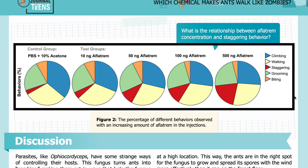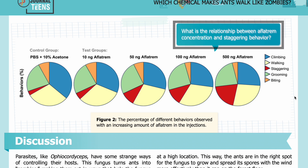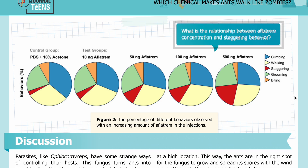The percentage of time each behavior was observed is represented by different colors: blue represents climbing, yellow represents walking, red represents staggering, green represents grooming, and orange represents biting. Looking at the figure, what is the relationship between aflatrem concentration and staggering behavior?